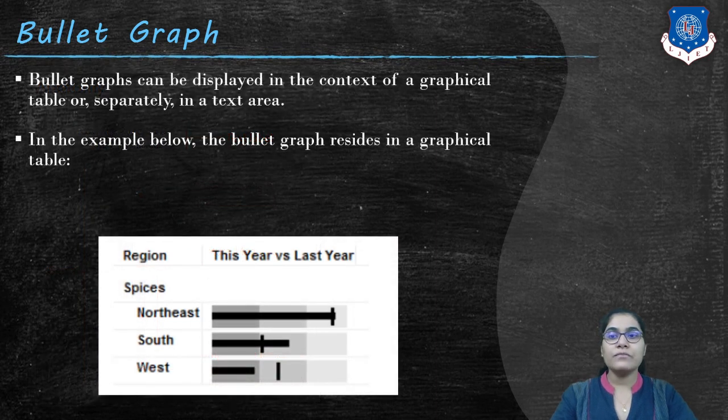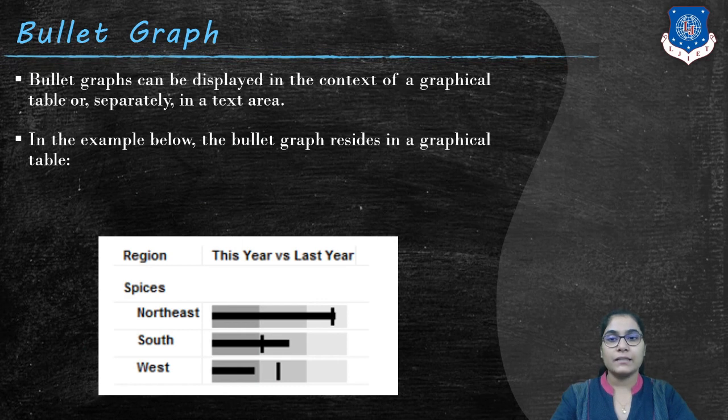Bullet graphs can be displayed in the context of a graphical table or separately in a text area. In the given example, the bullet graph resides in a graphical table. The table contains this year versus last year data of northeast, south, and west. For that, 3 different bullet graphs are used.